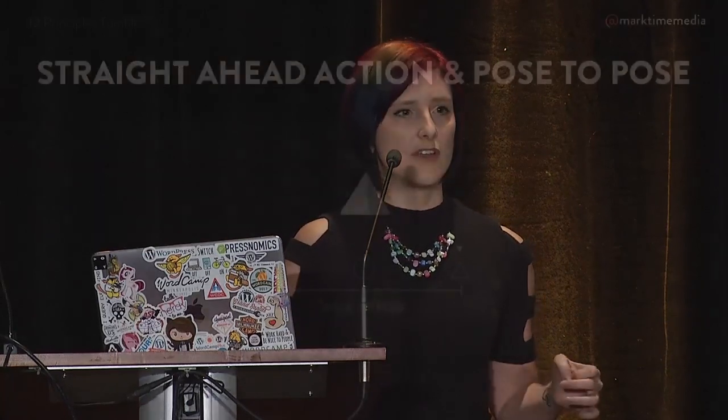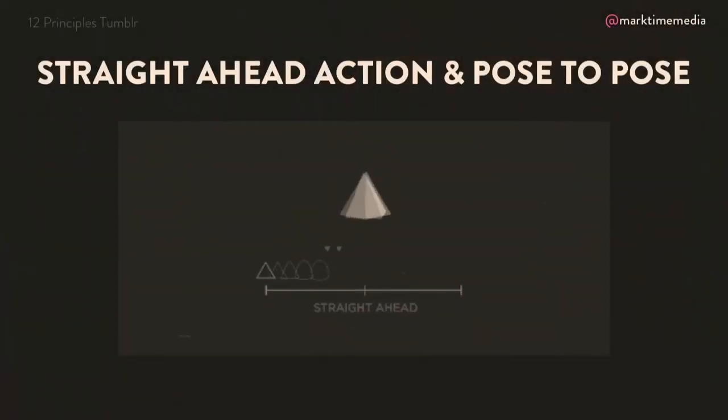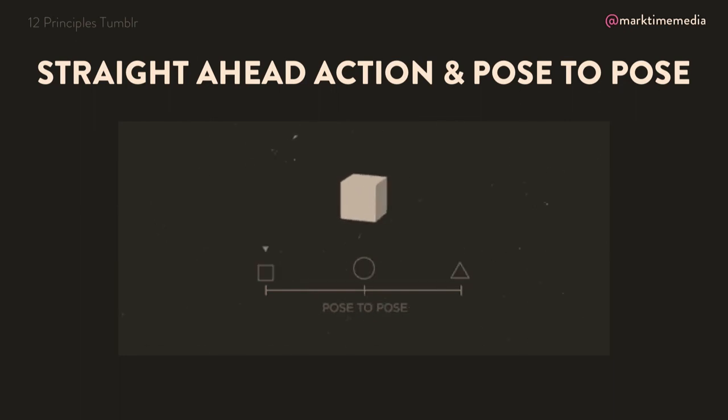There's a concept in animation known as straight ahead action and also pose to pose. This is basically how animators decided what went in between keyframes. Straight ahead action was when you actually drew every single keyframe individually — usually for more complex motions. Pose to pose was like, here are our most common key positions — square, circle, triangle — and we'll let the junior animators or the computer figure out how to get there.